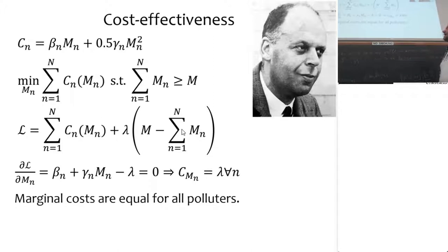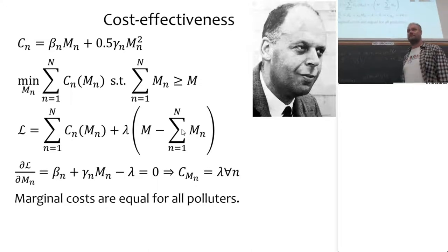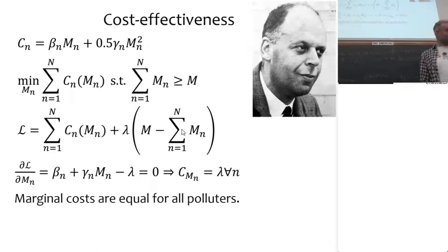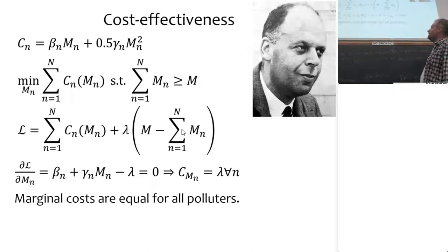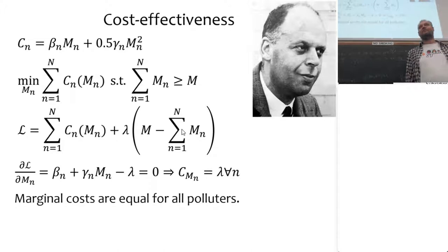If you don't do anything, you have zero cost of emission reduction. It's a quadratic function because otherwise the first-order conditions look nasty. This is a social planning problem: we want to minimize the total cost of emission reduction — the sum over all c-n — subject to the constraint that total emission reduction, the sum over m sub n, is greater than or equal to our target M.